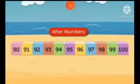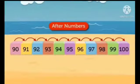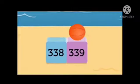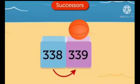Now, children, we are going to learn after numbers. What are after numbers? The numbers which are counted forward from the given number are called after numbers. In this image, you can see the ball is at the number 338. After 338, the next number will be 339. The arrow indicating 339 is also called the successor, or the after number is also called the successor.